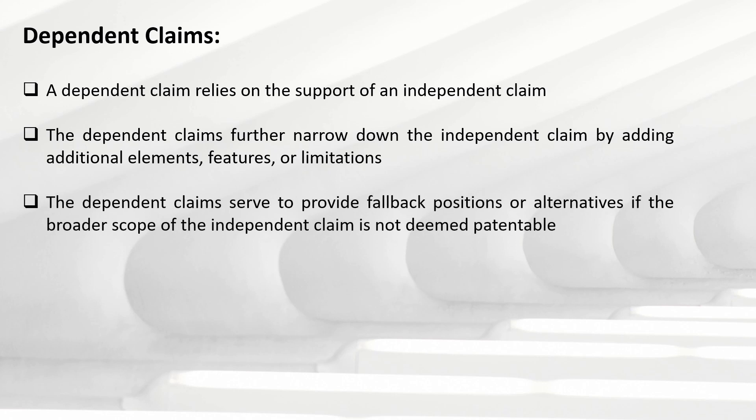The dependent claim serves to provide fallback positions when the broader scope of the independent claim is not deemed patentable. This is useful during prosecution — when an examiner cites prior art references that cover elements in the independent claim, the features mentioned in the dependent claims can be incorporated into the independent claim to narrow it down and differentiate it from the cited prior art references.